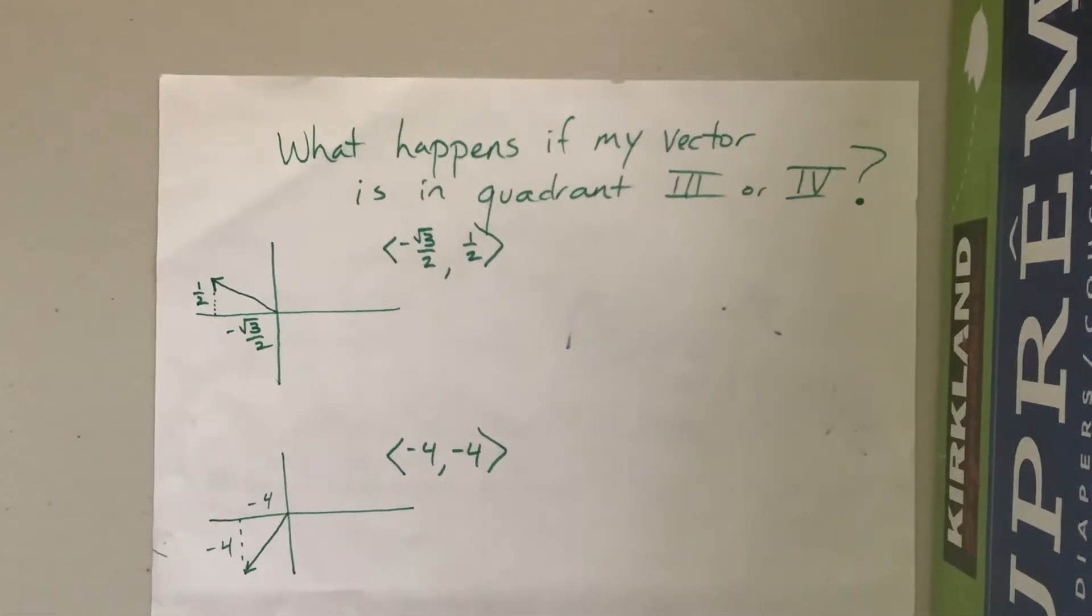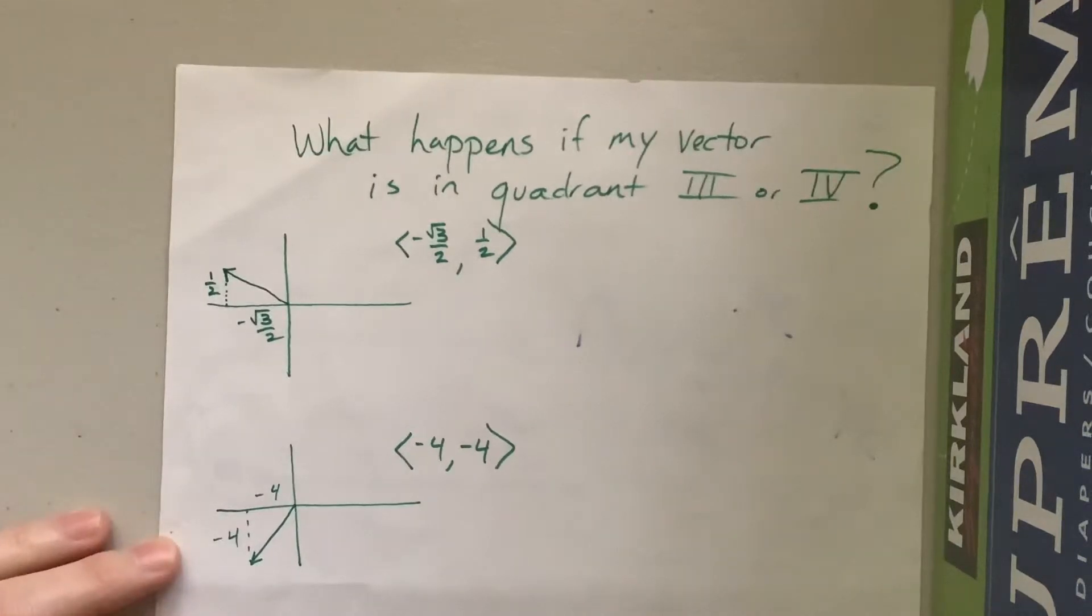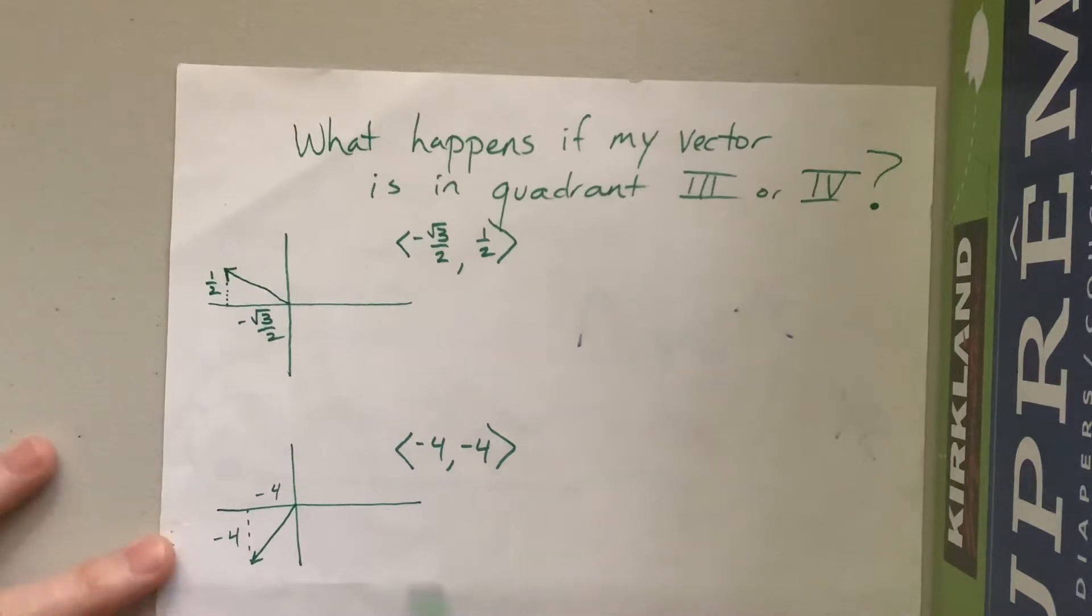I just had a question about what happens when I take the tangent to find the direction of a vector and I'm not in quadrant one or two. So I created these two little scenarios, partly because I don't have a calculator at home and it's easier for me to do angles that I know, but it works the same if it's some strange weird angle.